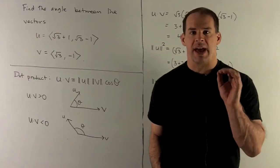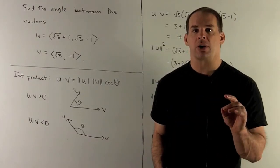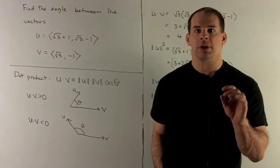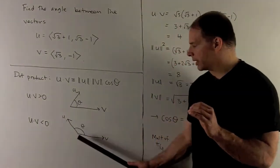If u·v is negative, then that means we're in the second quadrant on the unit circle. So we're looking at something like this.